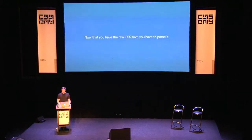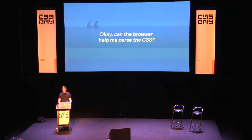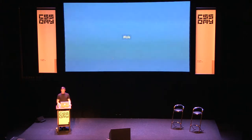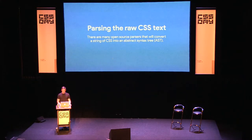Once we have the CSS text, we have to parse it. You could try regex find-and-replace, but I highly recommend against that, especially if you need to manipulate rule order. You really want to parse it properly. You might think the browser has a CSS parser you could reuse, but no — the browser doesn't expose that to you. So we'll use PostCSS, an open-source CSS parser I'm familiar with. There are plenty of alternatives.